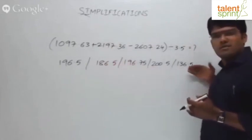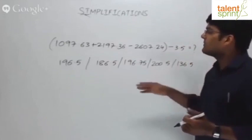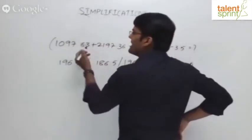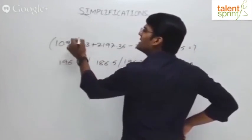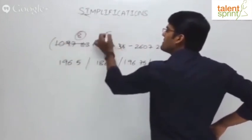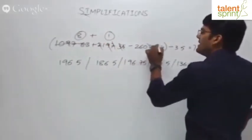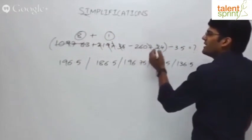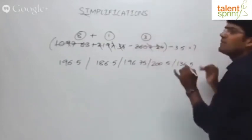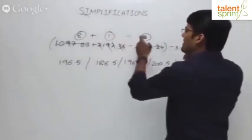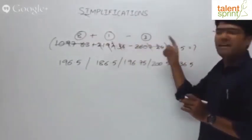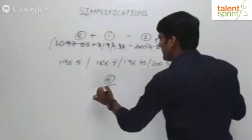Forget about decimals when finding root-digits. For 1097.63: 6 and 3 cancel, 9 cancels, leaving 1 plus 0 plus 7 = 8. For 2197.36: 9 cancels, 2 and 7 cancel, 3 and 6 cancel — root-digit is 1. For 2607.24: 7 and 2 cancel, remaining 2 plus 6 is 8, plus 4 is 12, root-digit is 3. So 8 plus 1 minus 3 is 6. Root-digit of the numerator is 6, divided by root-digit of 3.5 which is 8.